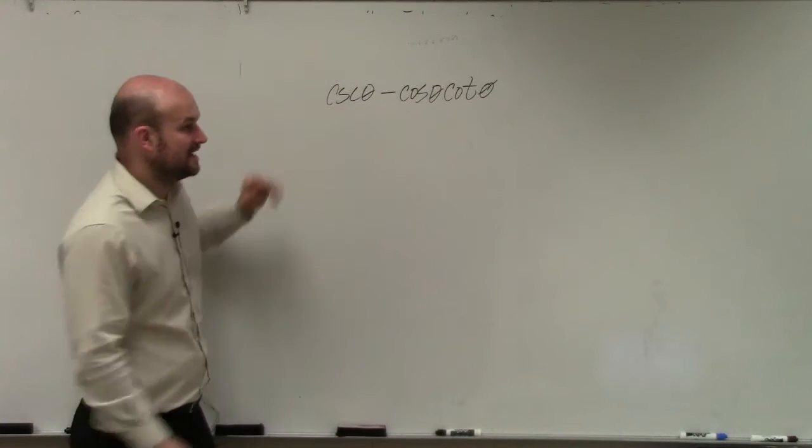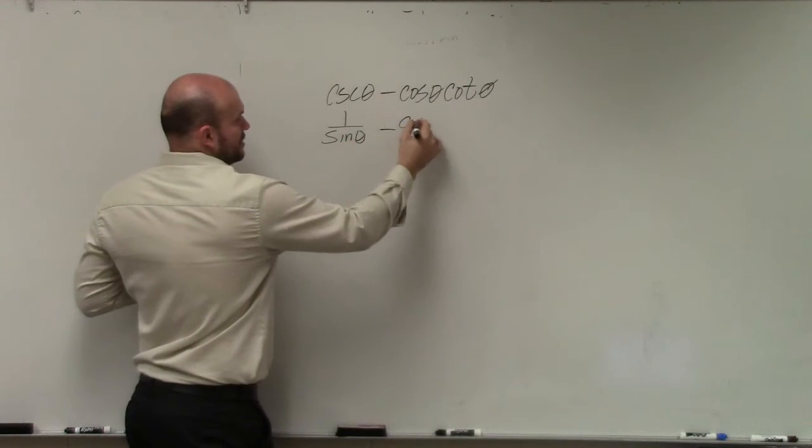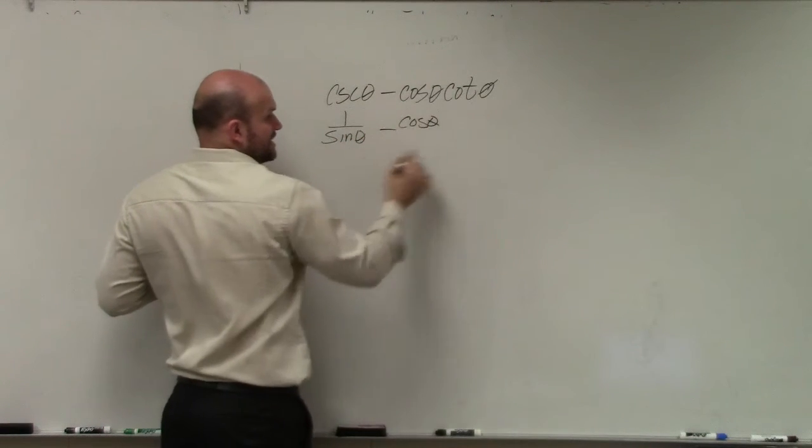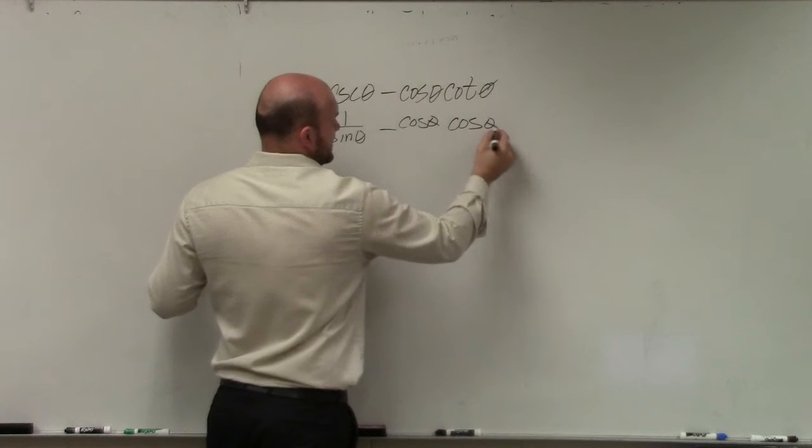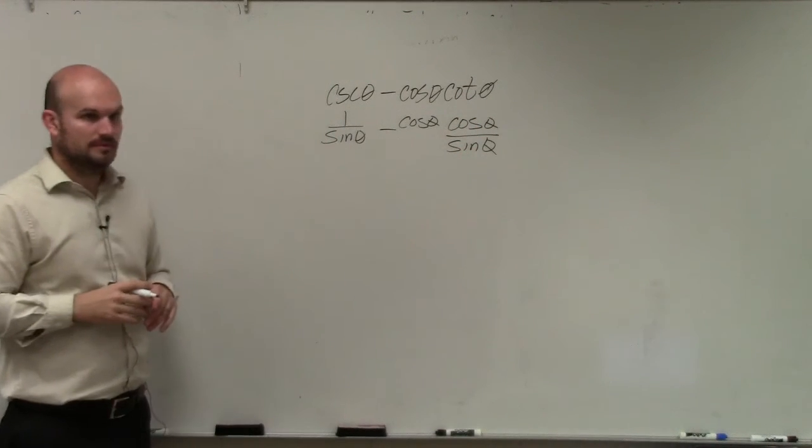So therefore, cosecant I can rewrite as 1 over sine of theta minus cosine of theta. And then cotangent I can write as cosine of theta over sine of theta, correct?